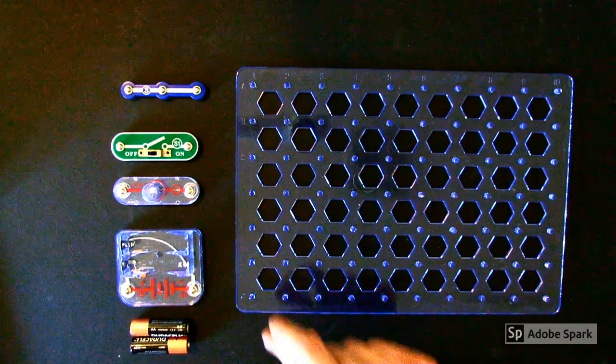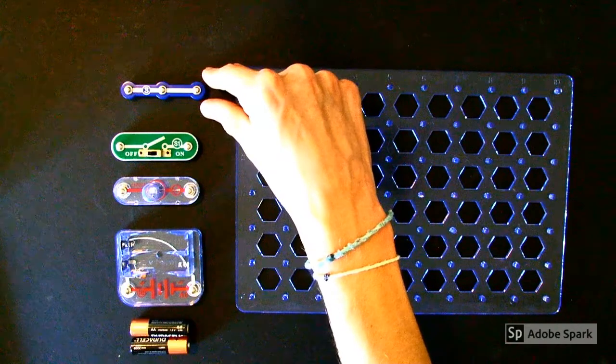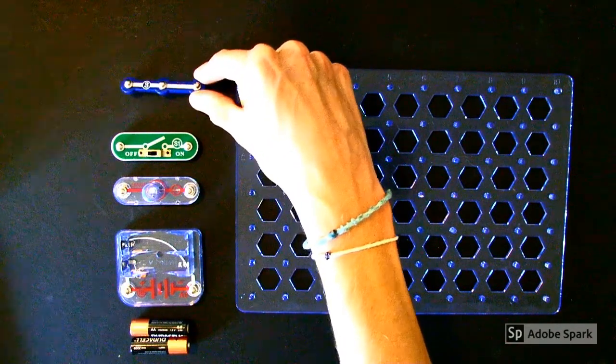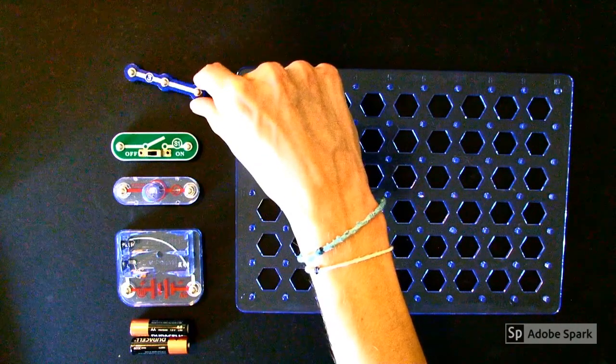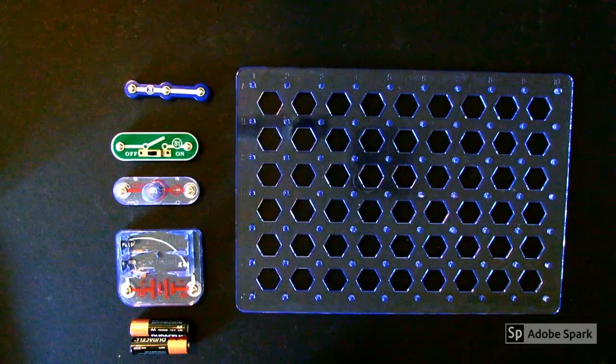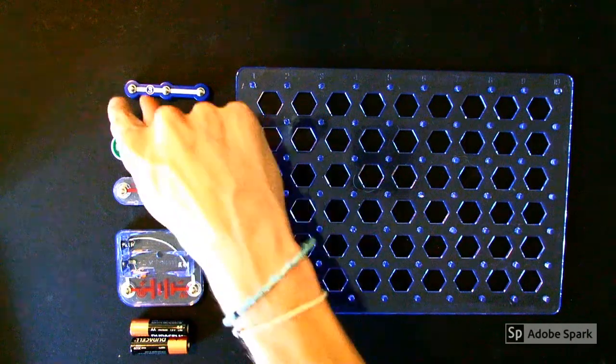For this activity you need the following components. First, a blue three snap wire. All wires are labeled in blue. They just transfer electricity from one point to another. Make sure yours has three snaps.